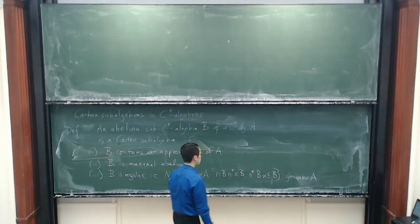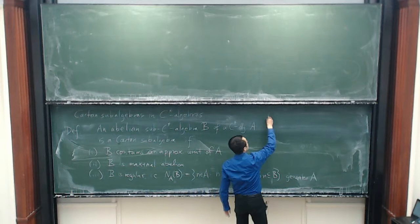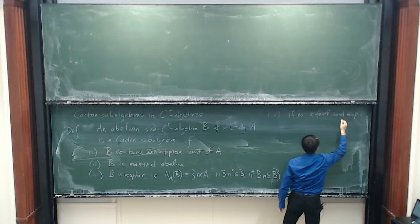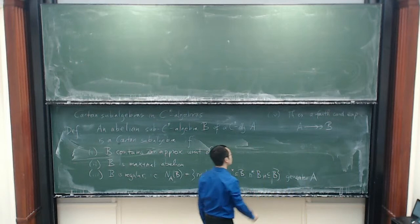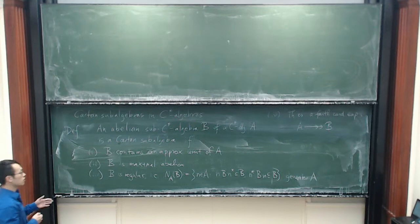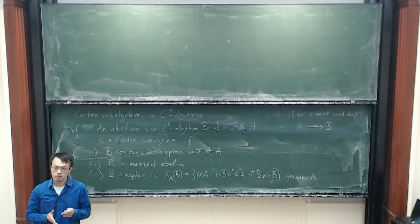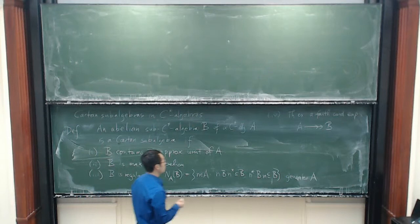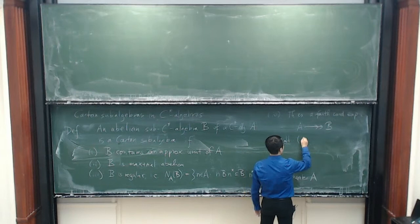One last condition is condition 4: we want to have a faithful conditional expectation from A onto B. That is the definition of a Cartan subalgebra. One side remark is that in condition 4 we just ask for the existence of a faithful conditional expectation, but given all the other properties this faithful conditional expectation is actually unique — there will only be one. We call this pair (A, B) a Cartan pair.